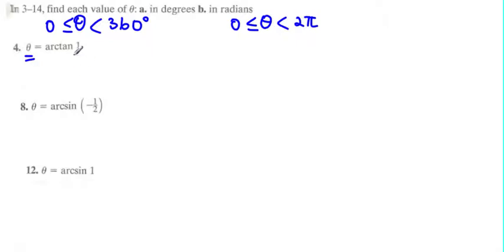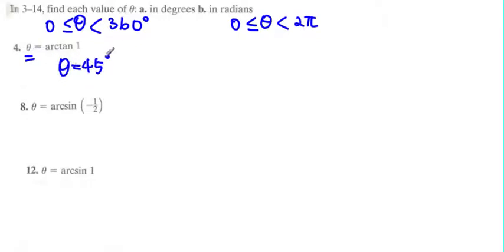When do you have tangent equal to 1? Since the tangent of 45 degrees is equal to 1, we know that one angle would be equal to 45 degrees. Tangent is also positive in the third quadrant, so with the reference angle of 45 degrees, the third quadrant angle would be 225 degrees.